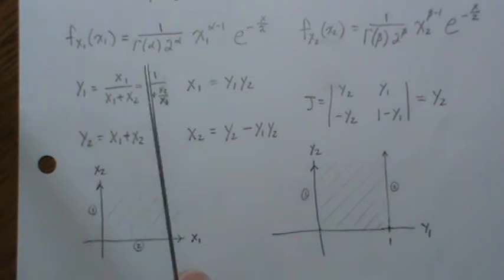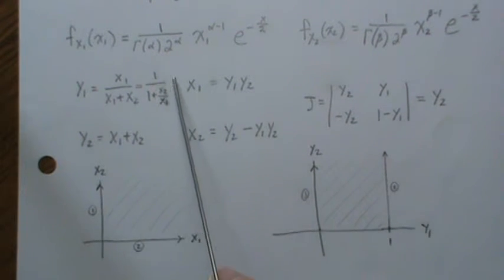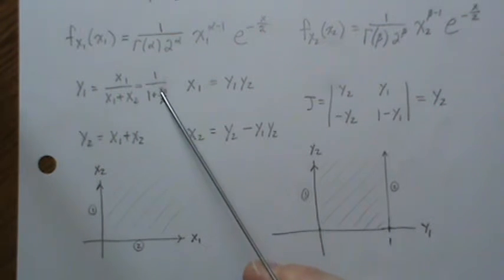And up here when Y2 is 0, this is where this one comes in handy. So if Y2 is 0, then this is 0, which means Y1 is 1.